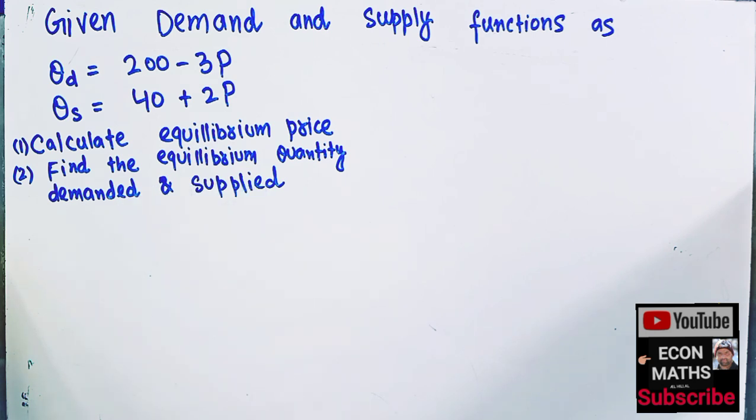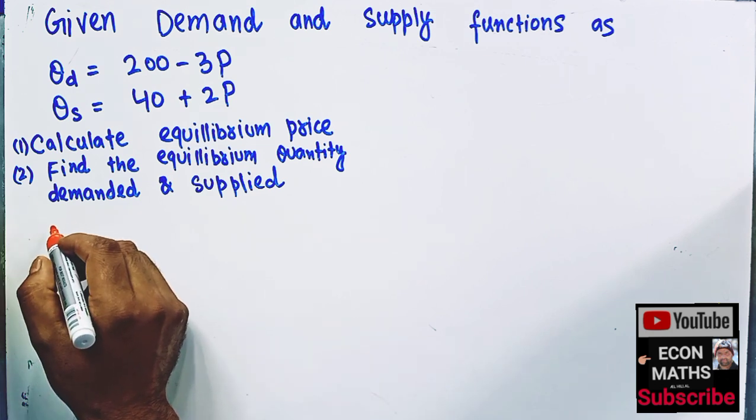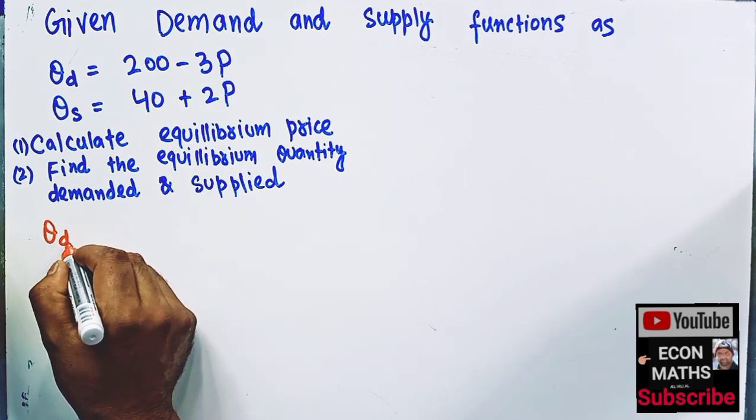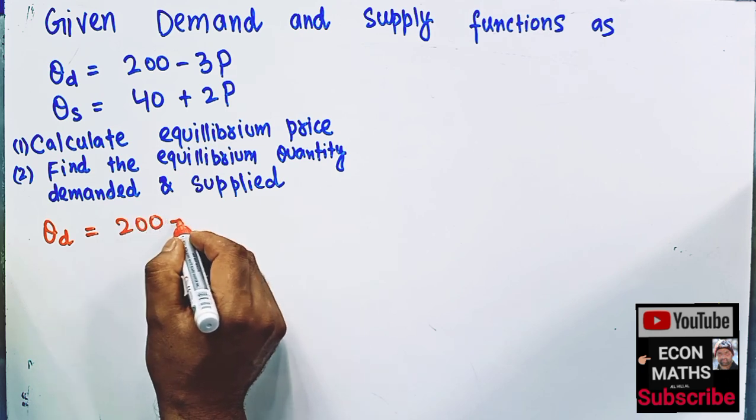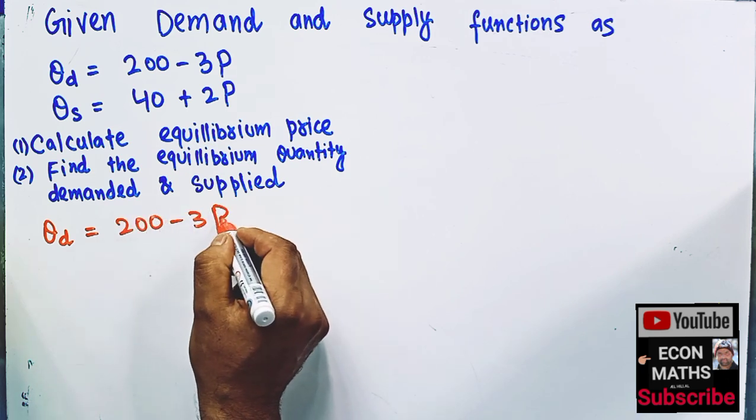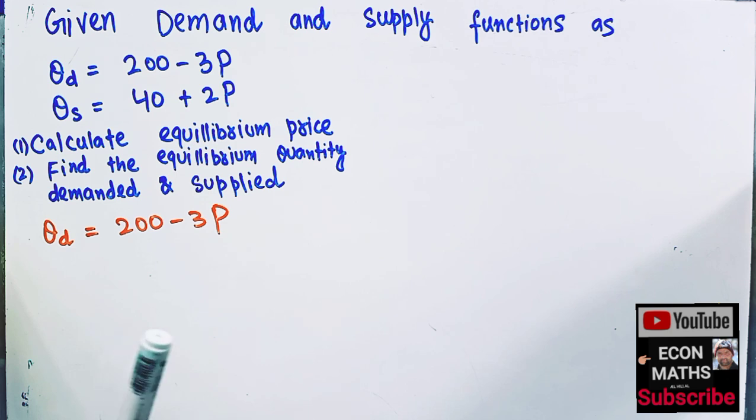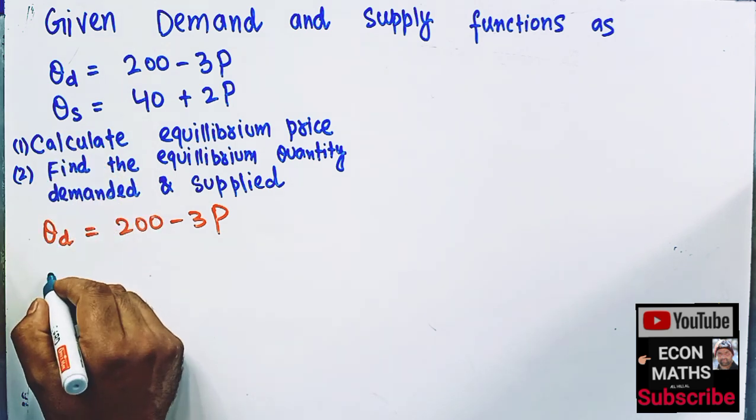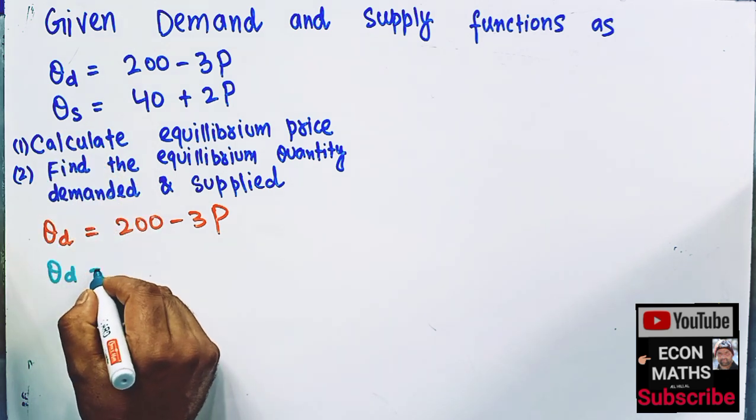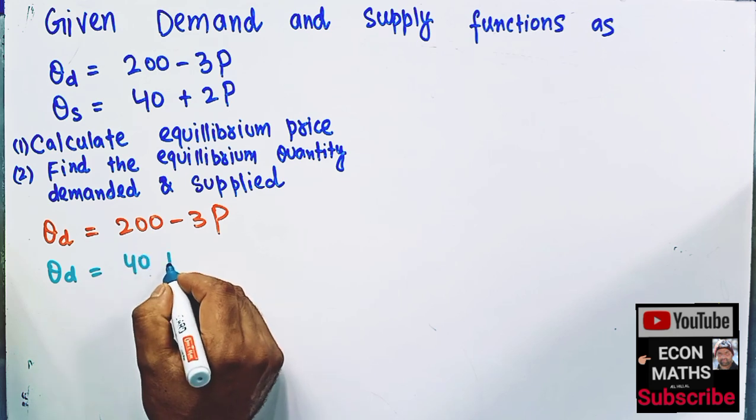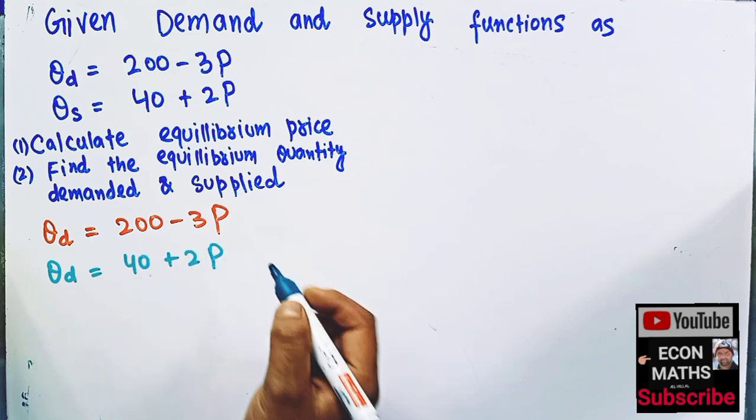So what we are being given here, we are being given the demand function. That is, Q subscript d is equal to 200 minus 3P. This is our demand function. Also, we are being given the supply function. That is, Q d is equal to 40 plus 2P.